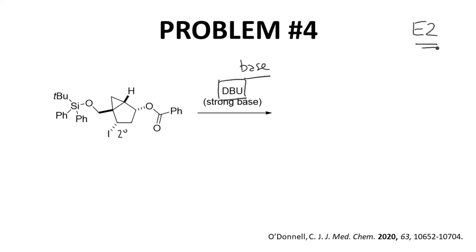Our only beta hydrogens are over here, so we'll use our base to remove a beta hydrogen and install our alkene to get the E2 product. There is our product with the alkene.